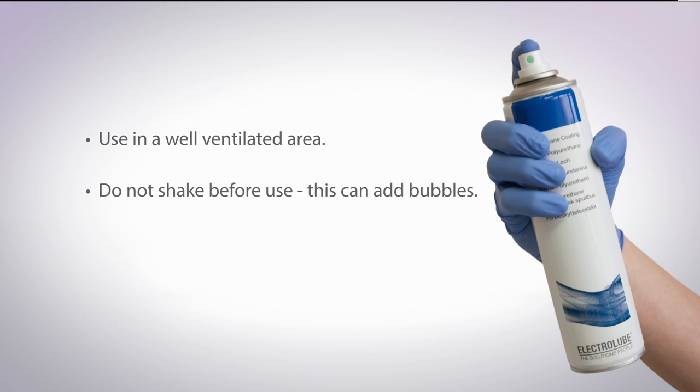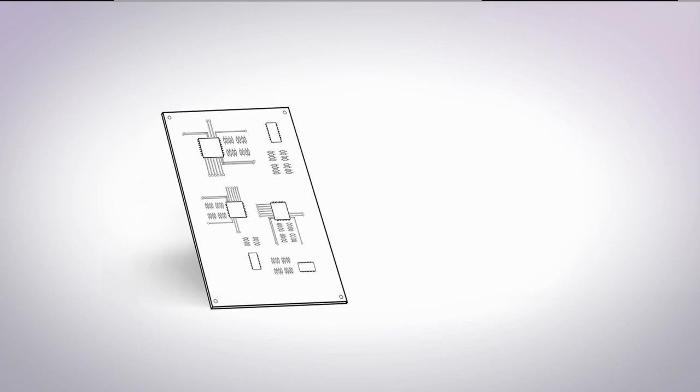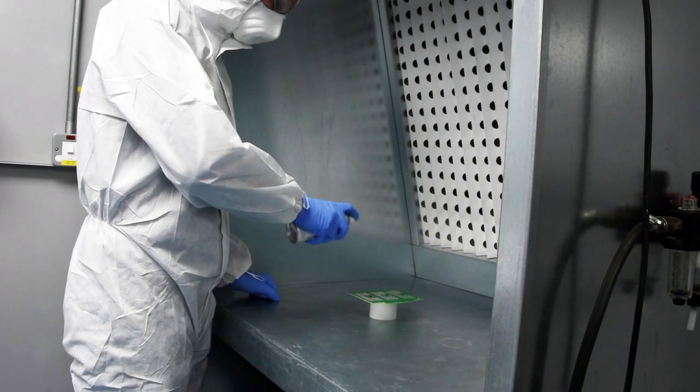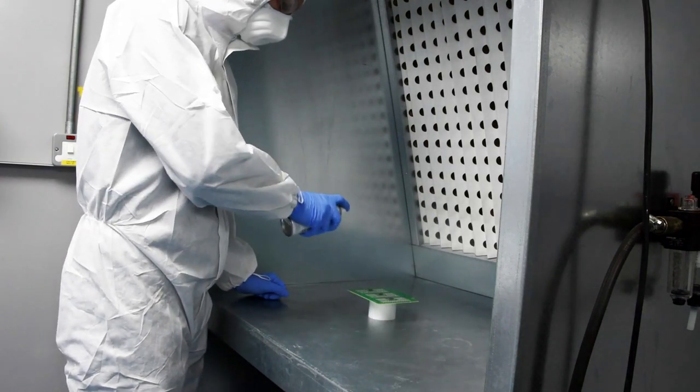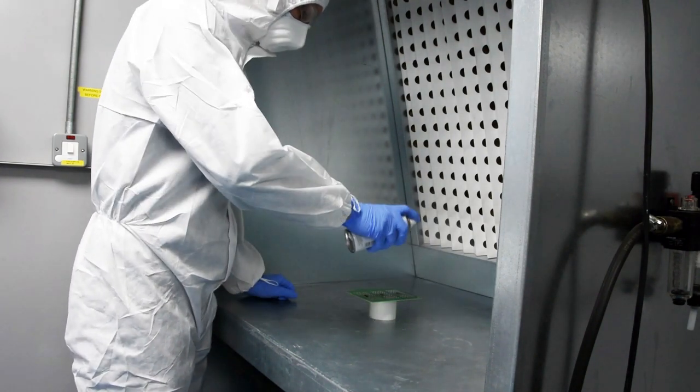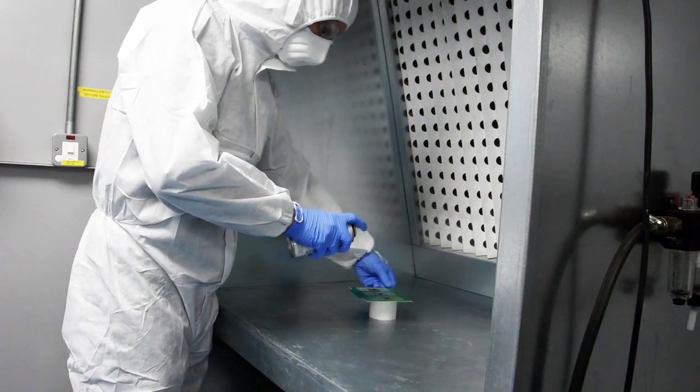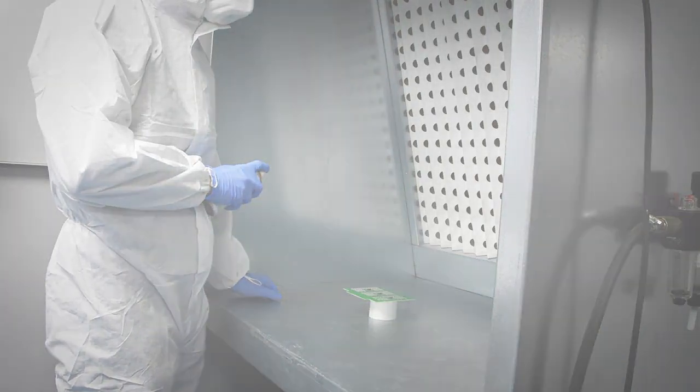Do not shake a coating can before use as this can add bubbles to the mixture which can be transferred to the board. The board should be at 45 degrees to the can and around 20 to 30 centimeters away. Spray the board in a continuous steady Z motion, coating evenly. The board should be rotated 90 degrees and the coating applied again using the same motion, and the board rotated again until you have rotated the board a full 360 degrees. This allows an even coating, ensuring the coating can penetrate under raised components from different angles. A turntable can be used to aid this process.